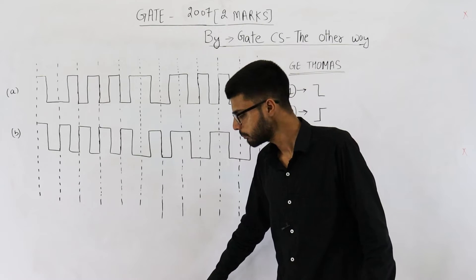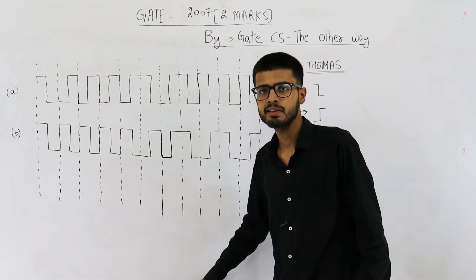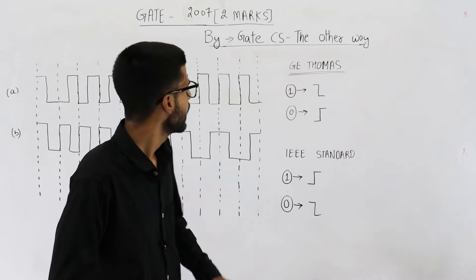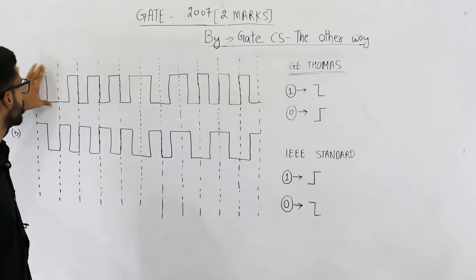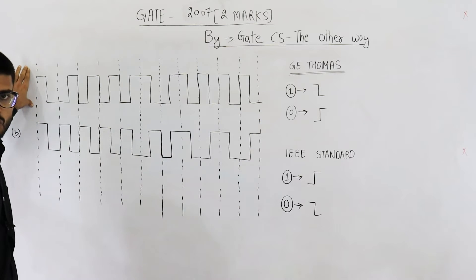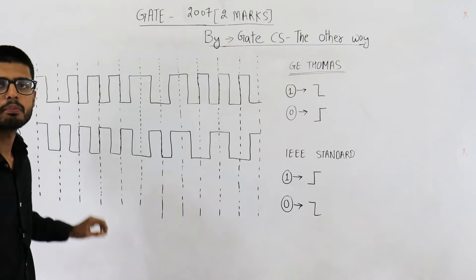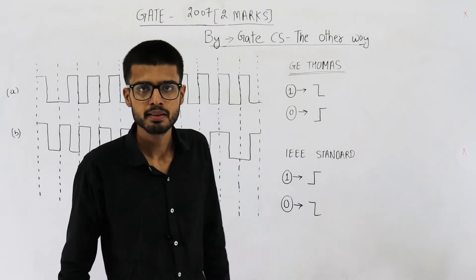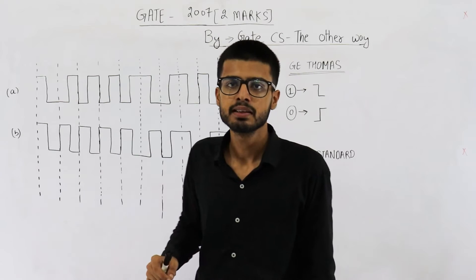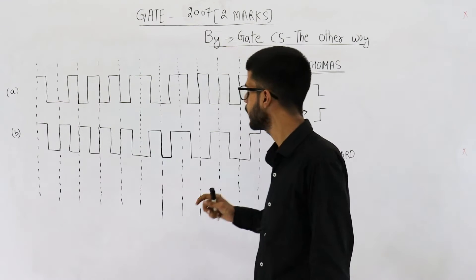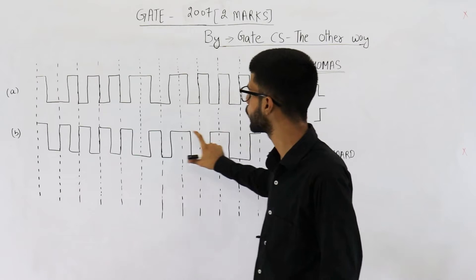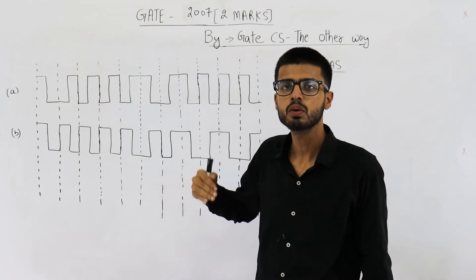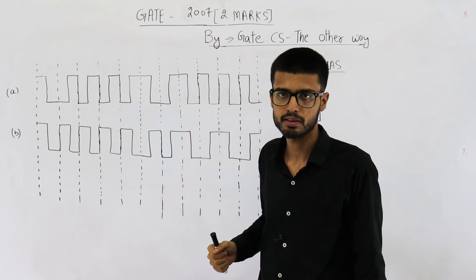They are saying some bit pattern is encoded using the Manchester encoding scheme and this waveform is what you get. What could be the bit pattern? The second thing they are asking is: if that same bit pattern is encoded into waveform B using some encoding scheme, what could that encoding scheme be?